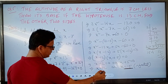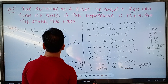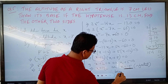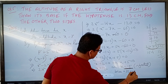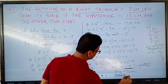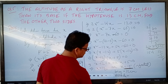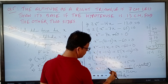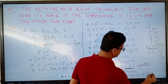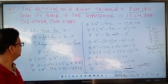Our accepted answer is x equals 12. Therefore, the base of the triangle is 12 centimeters. And the altitude equals x minus 7, which is 12 minus 7 equals 5 centimeters. So these are the required lengths: base is 12 cm and altitude is 5 cm.